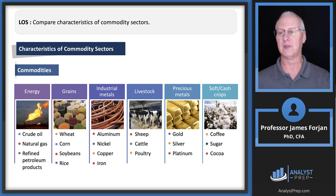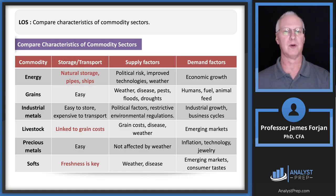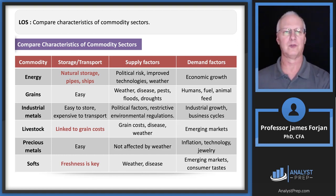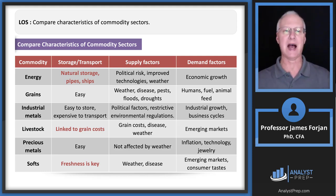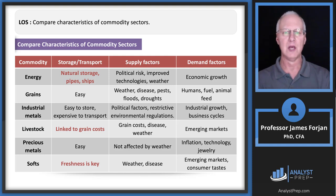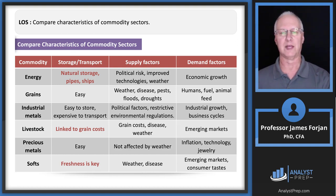This next slide is super important — get out your phone and take a picture. There are three columns on the right: storage and transport, supply factors, and demand factors. The supply factors include weather — which appears many times — political risk or political factors, and things like disease and pests.